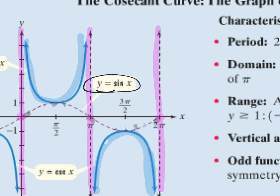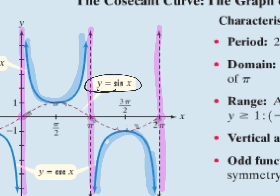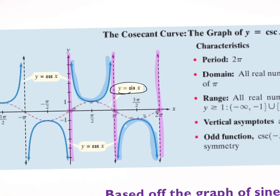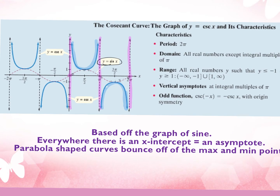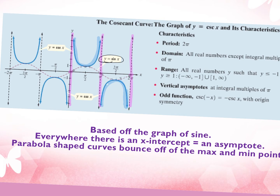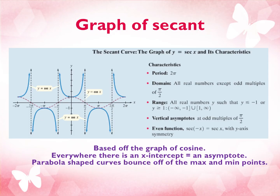So if cosecant uses sine, secant uses cosine — yes. Secant is based off of the cosine graph. We're going to graph the equation as though it says cosine instead of secant. We find our key points, plot our curve, then everywhere there was an x-intercept, draw an asymptote, and everywhere there's a max and a min, we bounce the parabolas off of it.